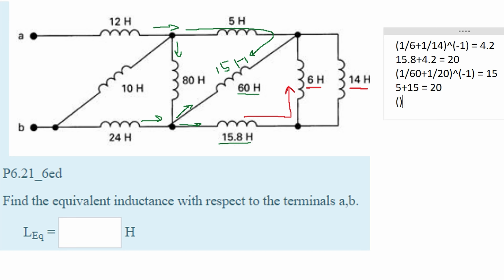Now we know that this 20 Henry is in parallel with our 80 Henry inductor, so we're going to do 1 over the first inductor plus 1 over the second inductor raised to the negative first power. If we do this we are going to get 16 Henry of inductance.